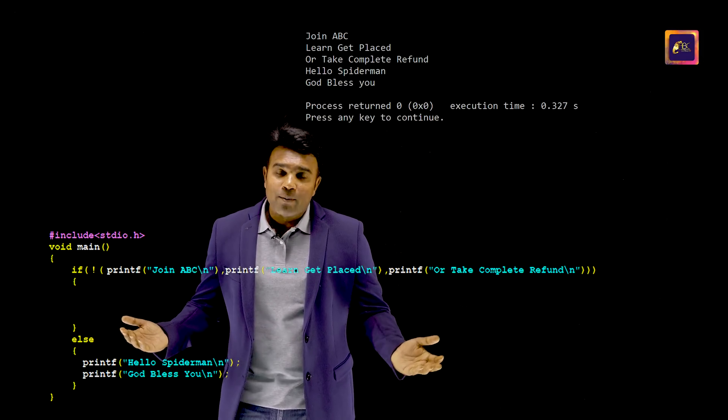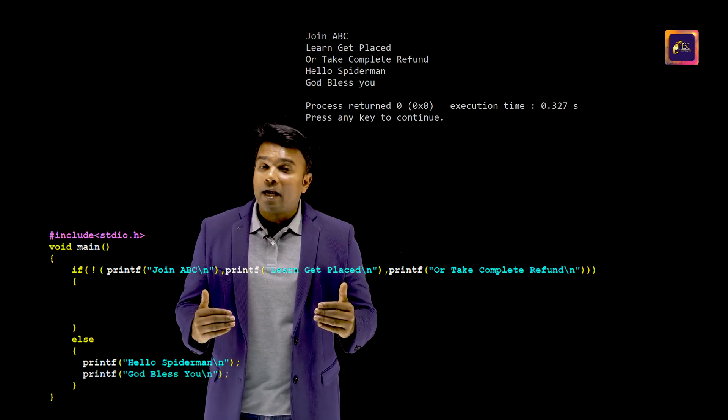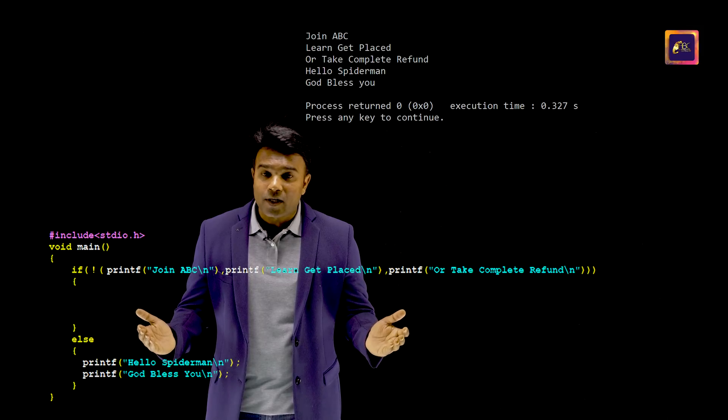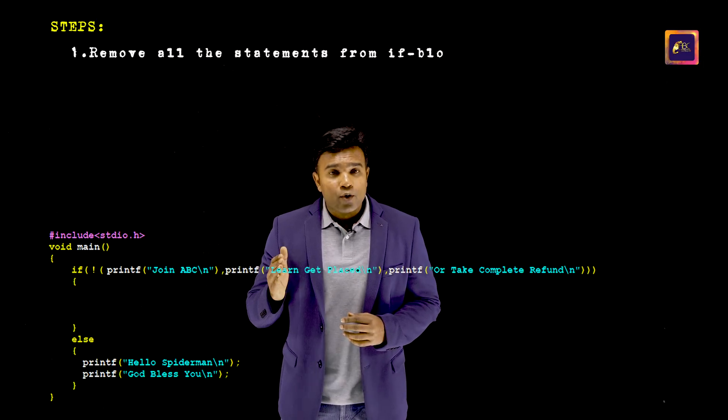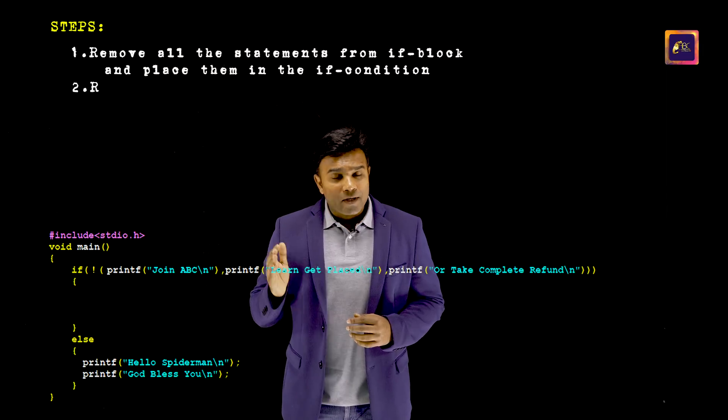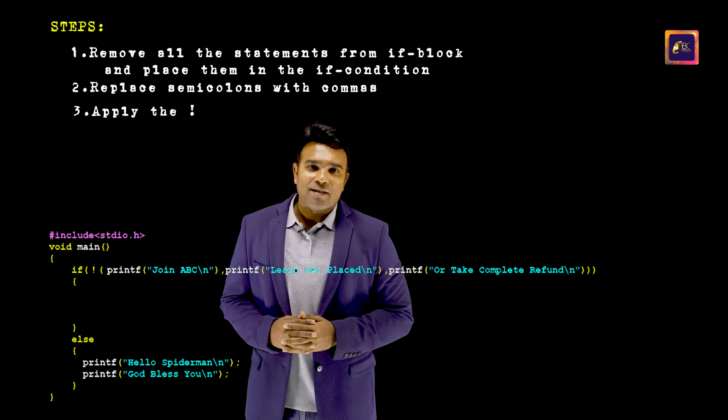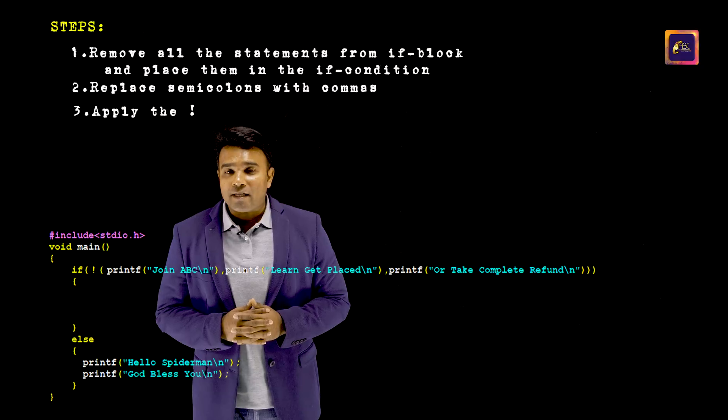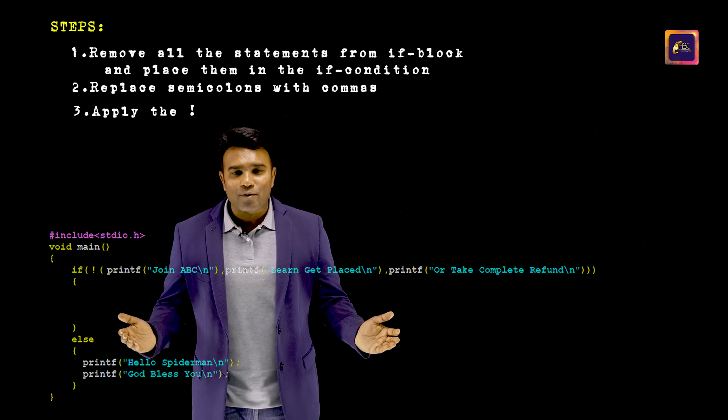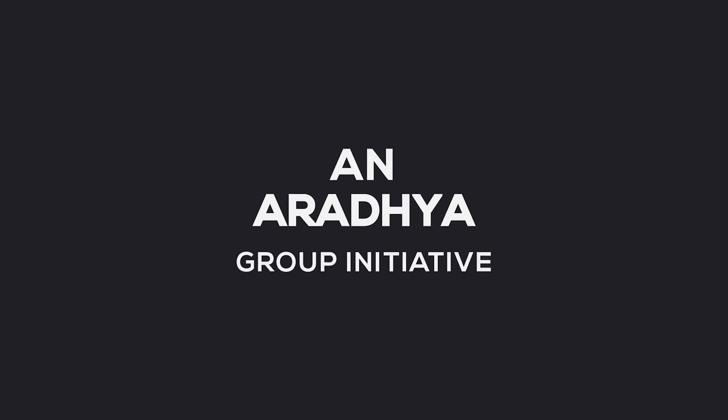So I think you've been able to understand that even if there are multiple statements in the if block and the else block, and if you want to execute them simultaneously in a single execution, it would still be possible using the technique just now that I have taught. So remove all the statements that are there in the if block and include them in the if condition. Replace the semicolons with commas. And finally apply the not symbol. This is the simple technique to execute all the statements that are there in the if block and the else block simultaneously in a single execution. Would this technique work well in Java as well? If you want to know, watch my next video.